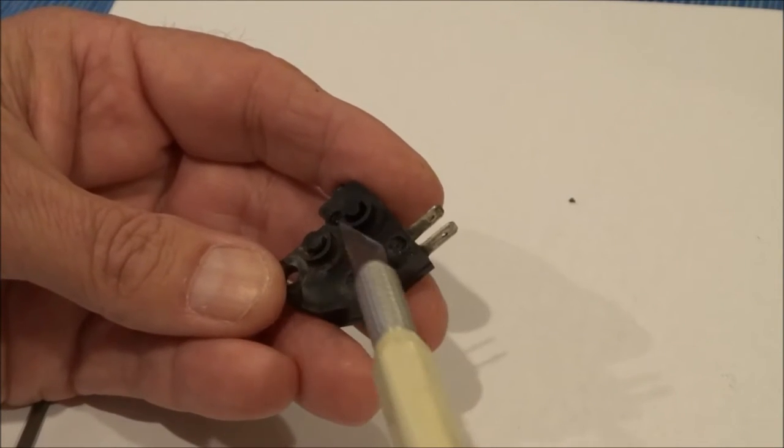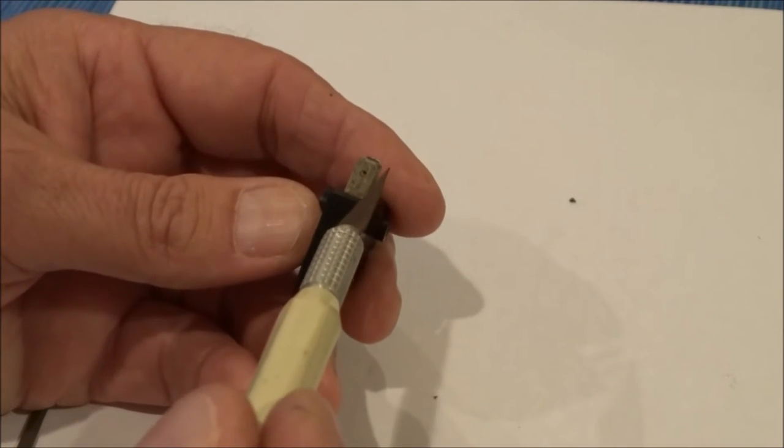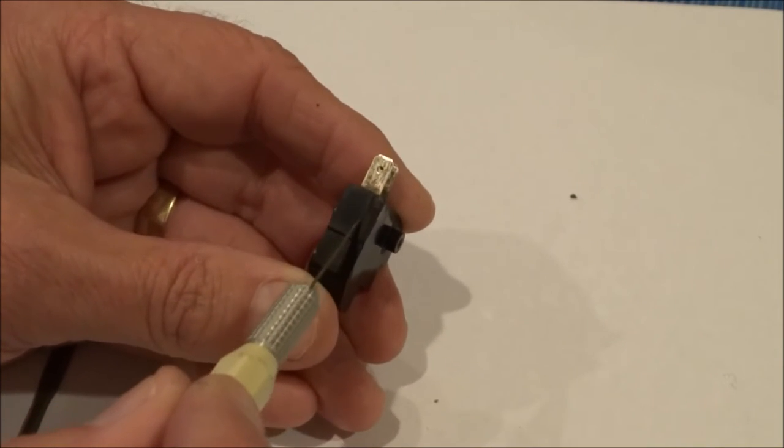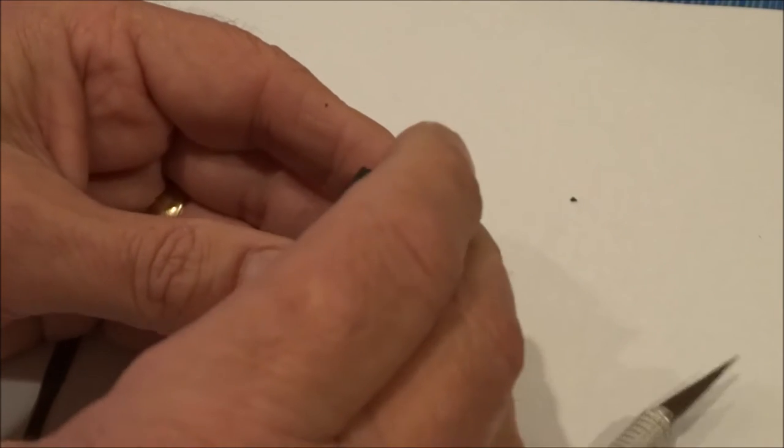With an X-Acto knife you can pop those heads off and then put your X-Acto knife right here and kind of get it down into the parting line between the two parts and pop it like that.